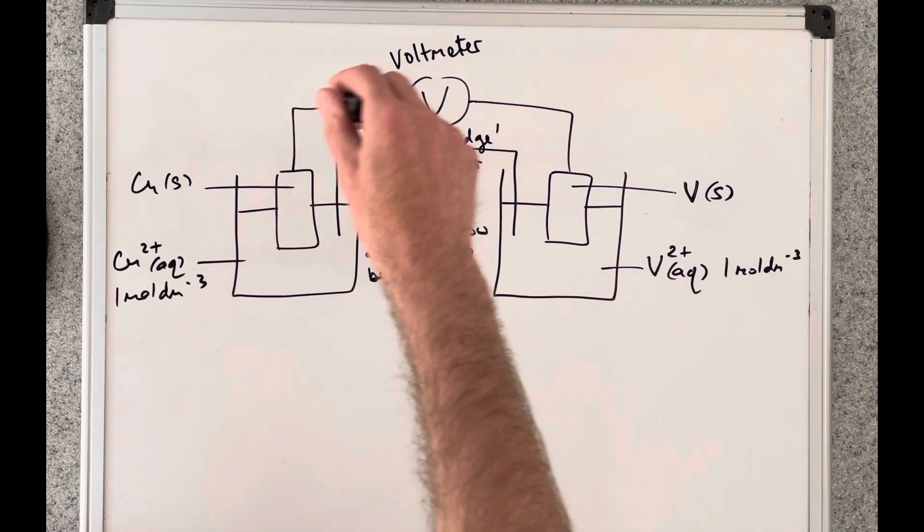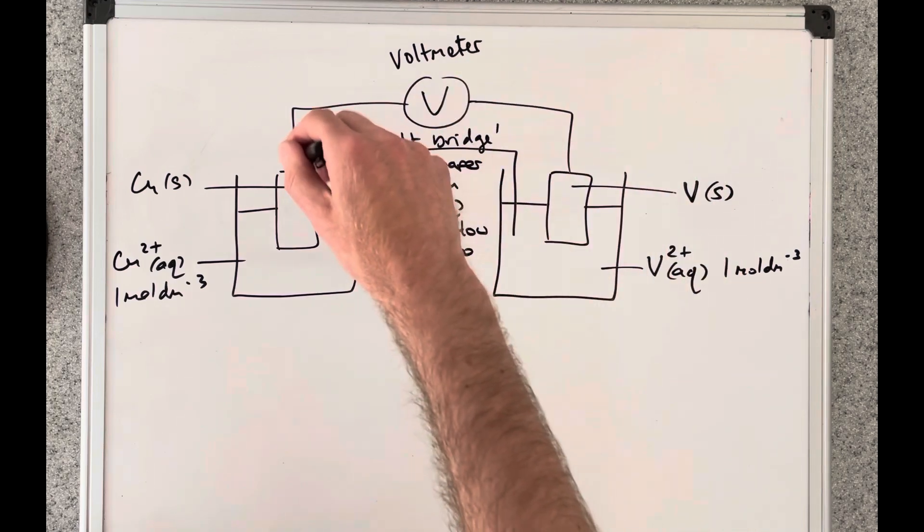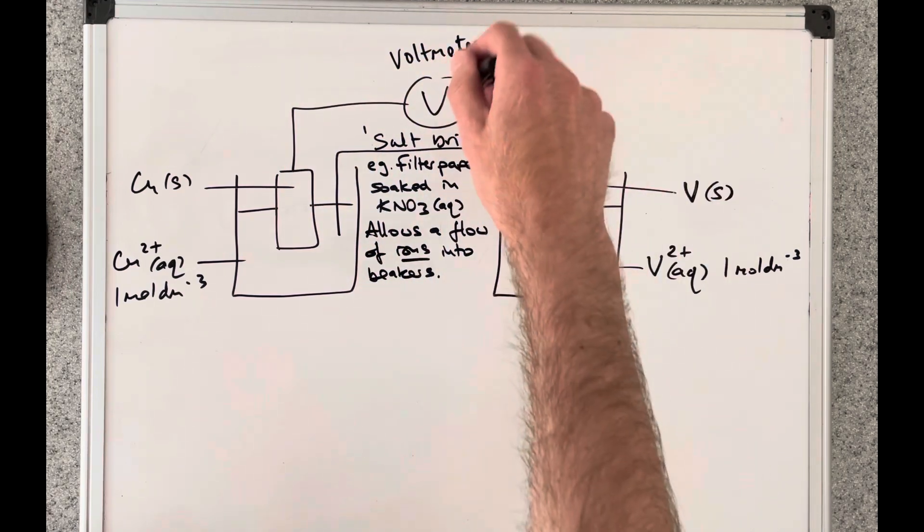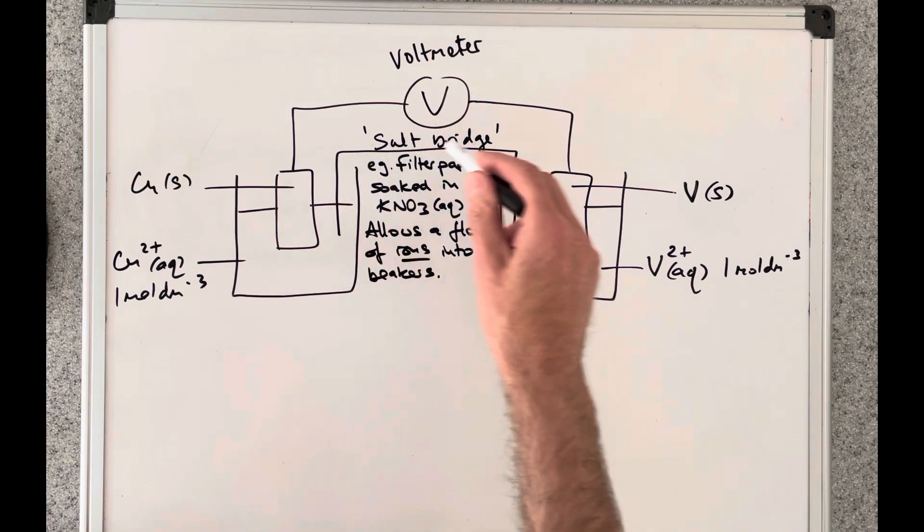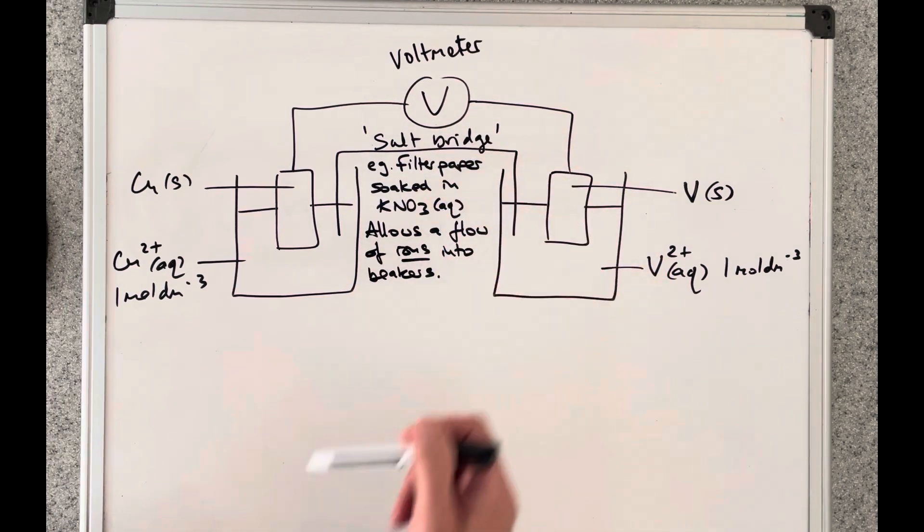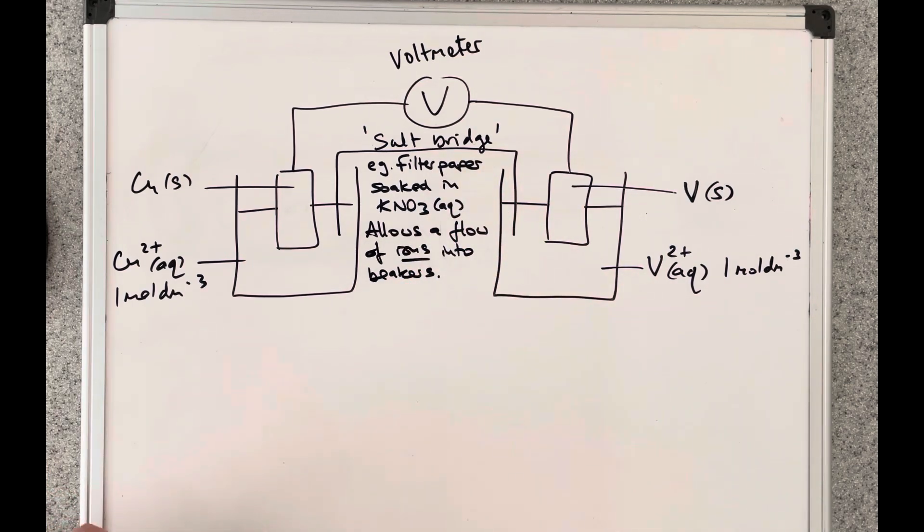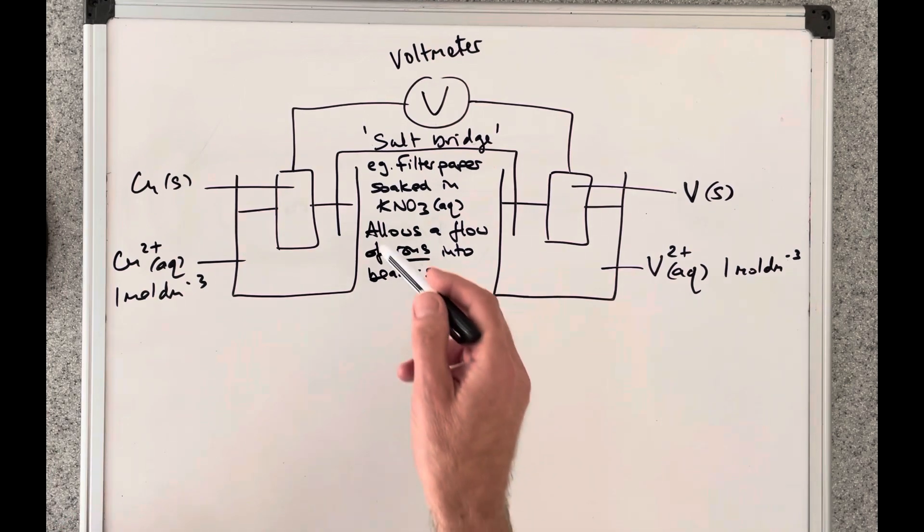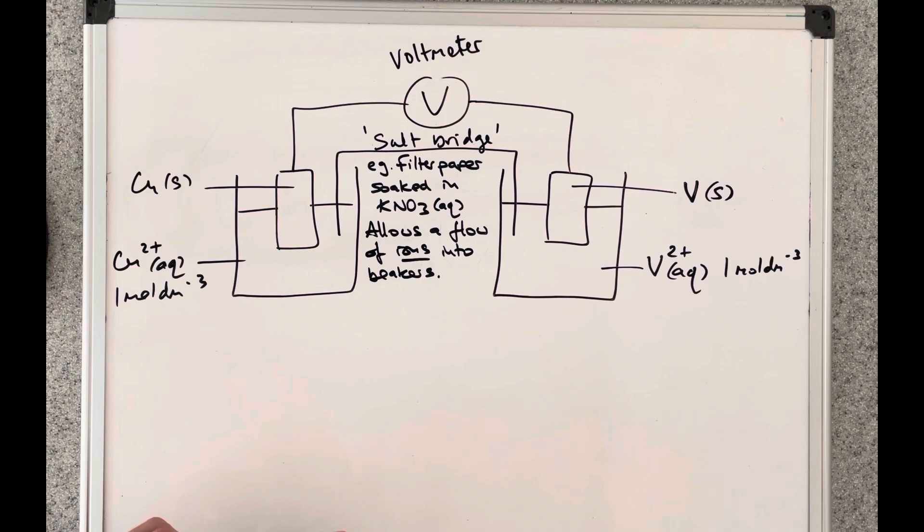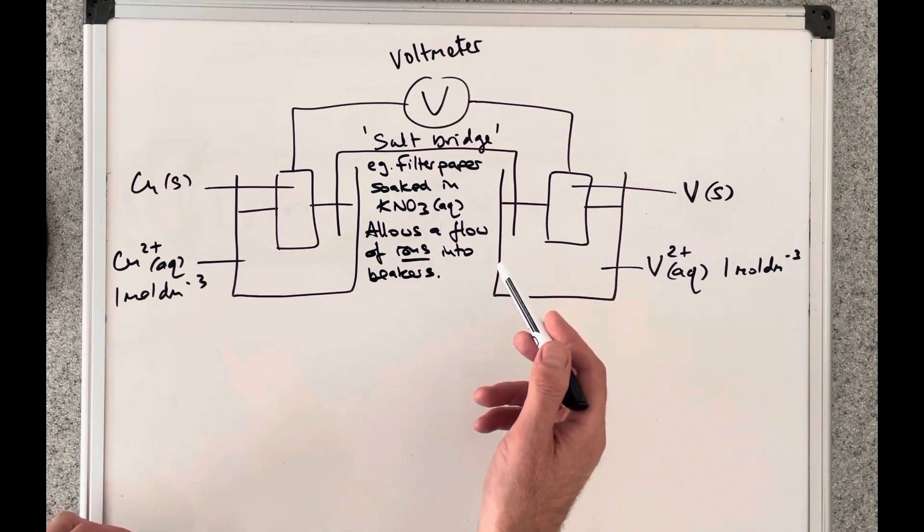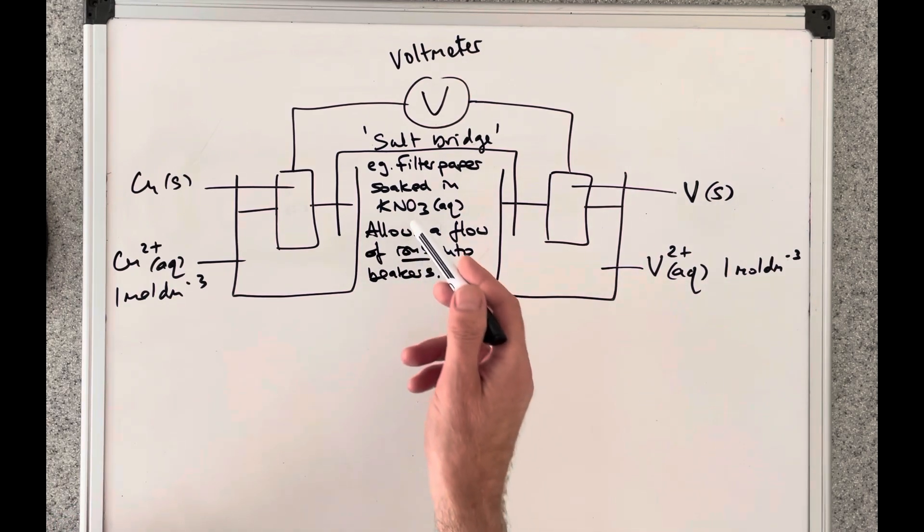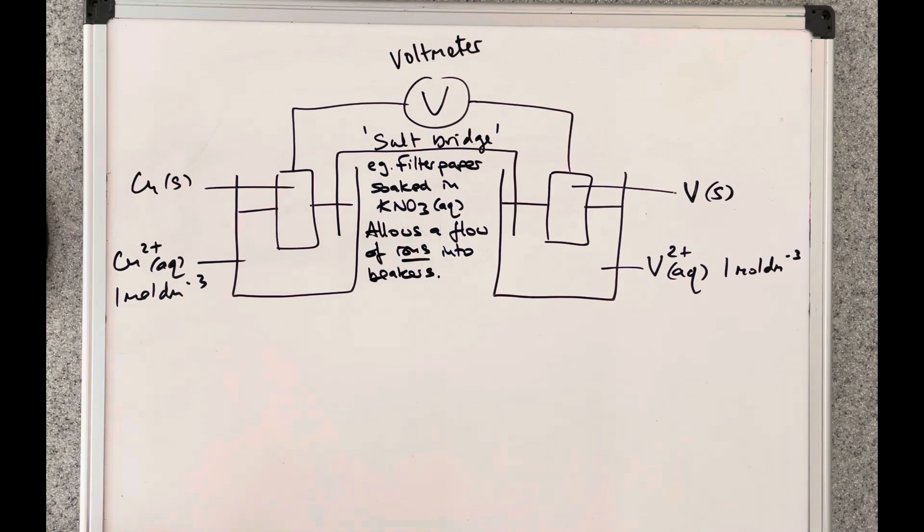There's an external circuit and so we've got wire here connecting the rods with a voltmeter in between and then connecting the solutions is what we call the salt bridge. Now that's just a piece of filter paper soaked in something like potassium nitrate solution. It just needs to be an electrolyte and what that does is it allows a flow of ions into the beakers. So it'll be the K plus ions and the NO3 minus ions in this case.